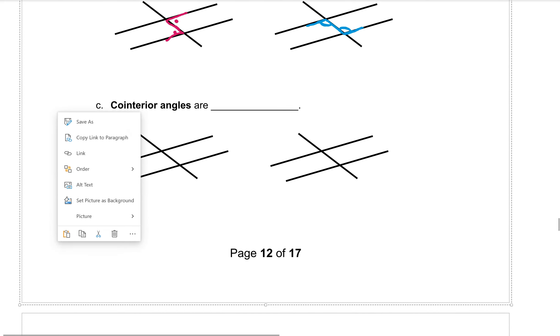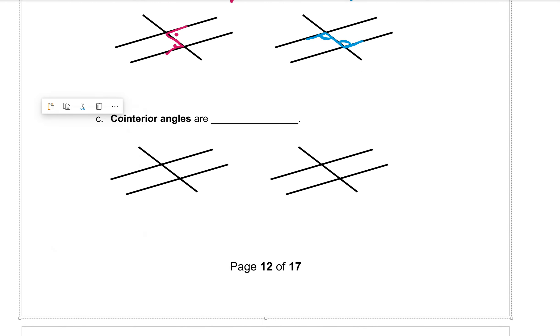All right, the third type of angle we call co-interior angles. Now these ones are not equal. They are supplementary. So maybe you remember that word from a few lessons ago.